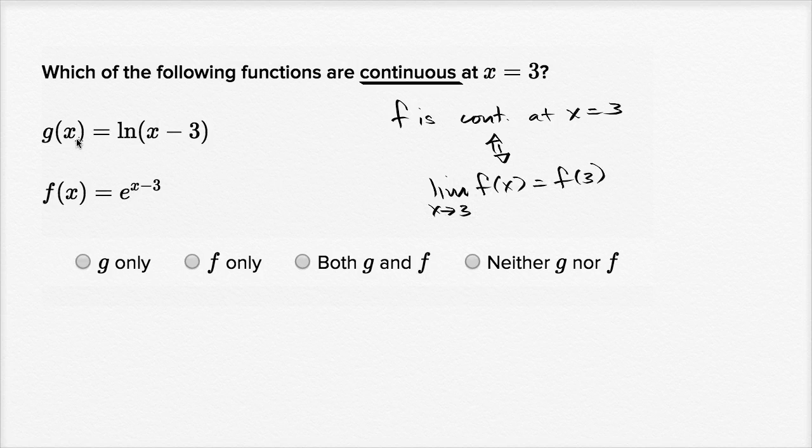Now let's look at this first function right over here: natural log of x minus three. Well, try to evaluate g of three. g of three is equal to the natural log of zero, three minus three. This is not defined.